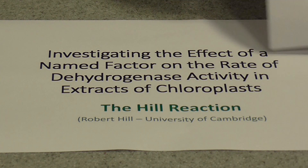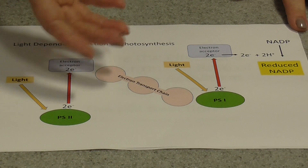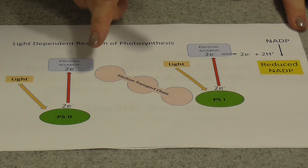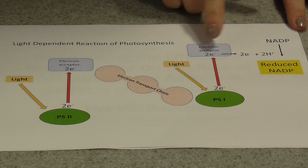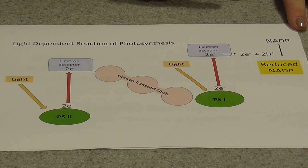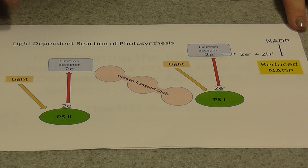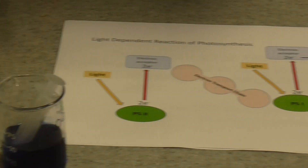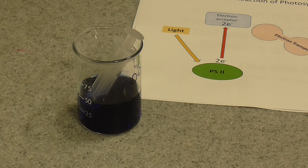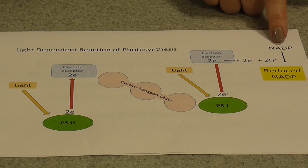Just to remind you what the light-dependent reactions involve: basically we have the release of electrons from chlorophyll. The electrons then flow down an electron transport chain from photosystem 2 to photosystem 1. Ultimately the electrons end up reducing a coenzyme called NADP, along with hydrogen from water, to form reduced NADP. In this experiment we're going to use a bright blue chemical called DCPIP, which is going to take the place of NADP.